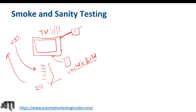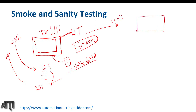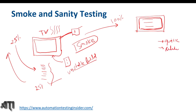Now for sanity testing using the same TV example: suppose the TV has been 100 percent implemented, rolled out to the market, and a user reports that the screen doesn't come on when switching on the TV. The customer service team does a bug fix for this issue. Before doing full regression testing, they quickly check whether the bug fix is working and test related functionalities.